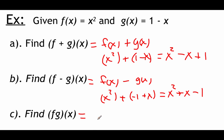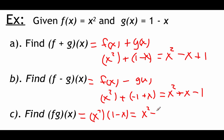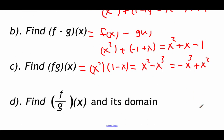Multiplying these two functions together works just like the distributive property. We take f(x) and multiply it by g(x), so that's x² times (1 − x). We just distribute the x², giving us x² − x³. Rewriting in descending power order, we get −x³ + x².